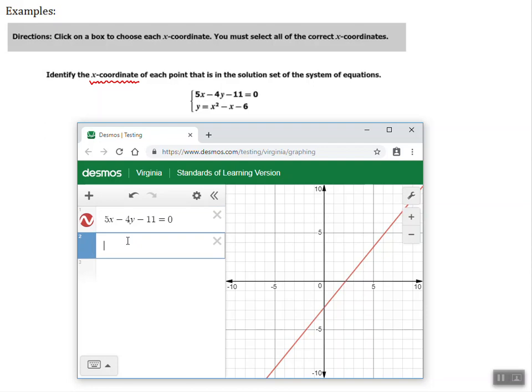And since we have another graph, I'm going to type that one in. Y equals X squared minus X minus 6. And that's it. We have our red line and we have our blue parabola.